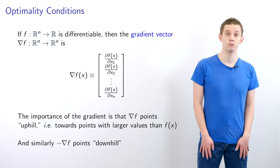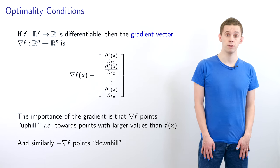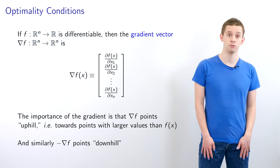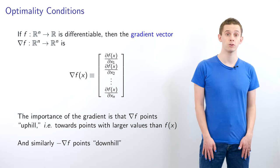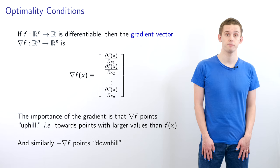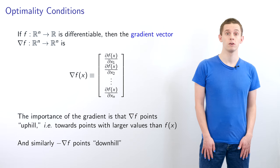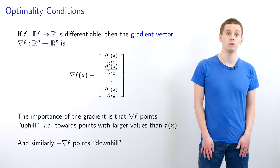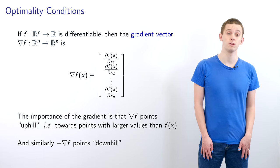Let's consider a function f from ℝⁿ to ℝ that's differentiable. We can define the gradient vector, which is a function from ℝⁿ to ℝⁿ with components given by the partial derivatives of f. The importance of the gradient is that ∇f points uphill — if we look in the direction of ∇f, the function values will be larger. Similarly, minus ∇f points downhill.